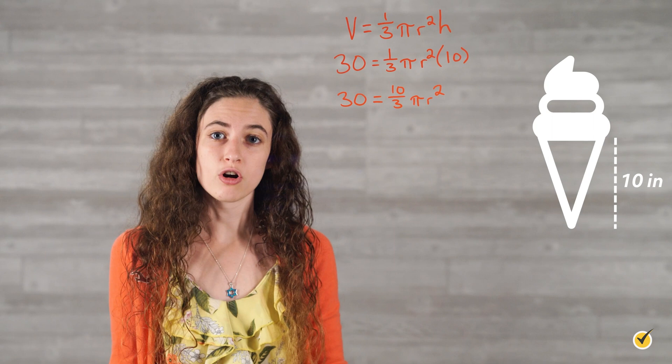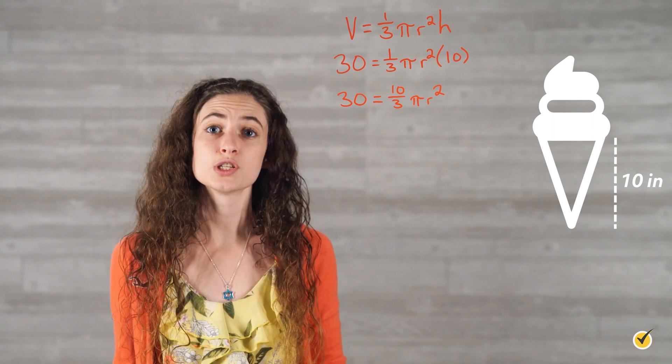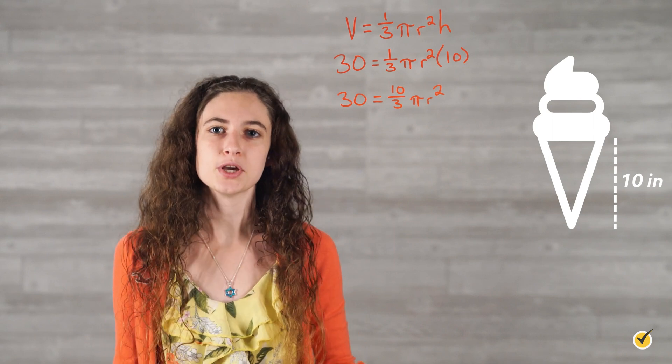Now, we're trying to get r all by itself on one side of the equal sign. To do this, we're going to multiply both sides by 3 over 10 pi.